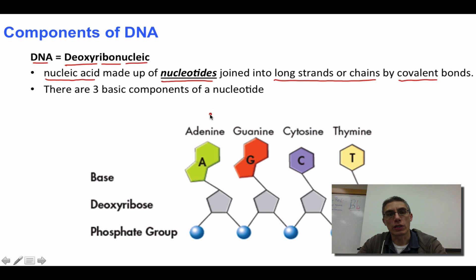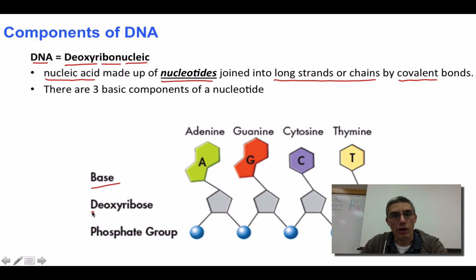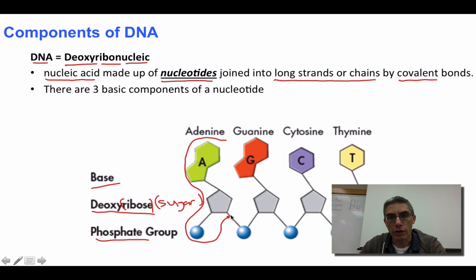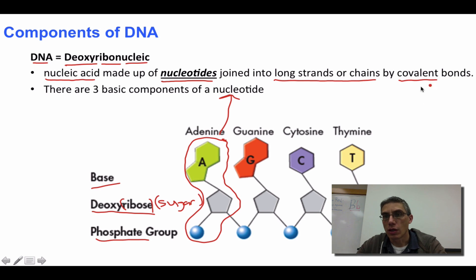There are three basic components of a nucleotide. We have a nitrogen base — these are the colored nitrogen bases you see right here — and there are four different types: adenine, guanine, cytosine, and thymine. We also have a sugar, and that is what deoxyribose stands for. The word ribose represents a sugar, and in this case we have a 5-carbon sugar in a pentagon shape. Then we have a phosphate group, represented by the blue spheres at the bottom. Each one of these would be considered a nucleotide, so we actually have four nucleotides here. These four nucleotides are joined together by an alternating sugar-phosphate-sugar-phosphate arrangement, with connections made by covalent bonds between each of those nucleotides.